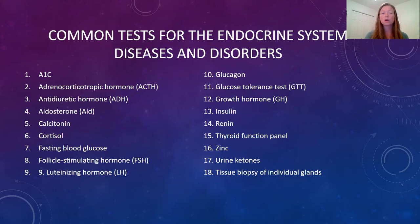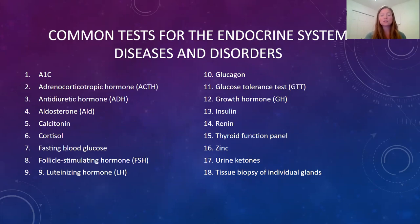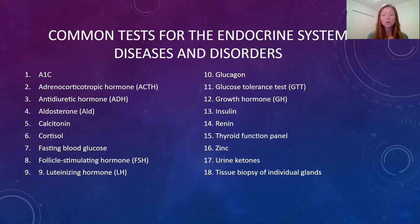Some of the more common blood tests or other tests related to the endocrine system are on pages 103 through 104 in your textbook, table 5-9. These tests might help diagnose things such as Addison's disease, Graves' disease, goiters — which have to do with the thyroid — thyroid cancer, diabetes, or different types of cancers of those specific glands.